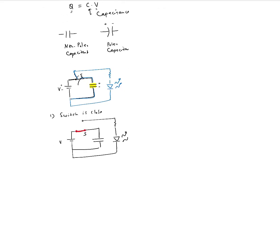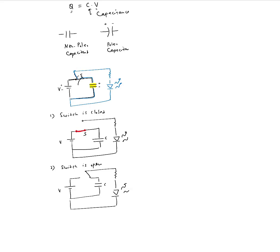When the switch is open, the capacitor is fully charged. The capacitor now acts as a battery — it finds a path to discharge through the LED. Current flows from the positive terminal of the capacitor through the LED, and it briefly lights up the LED until the charge on the two metal plates is completely dissipated — that is, until the capacitor is fully discharged.